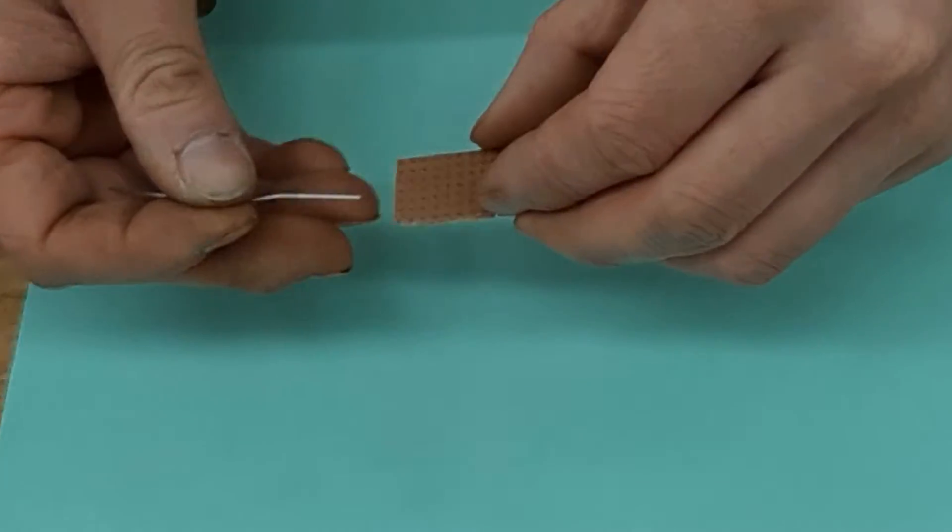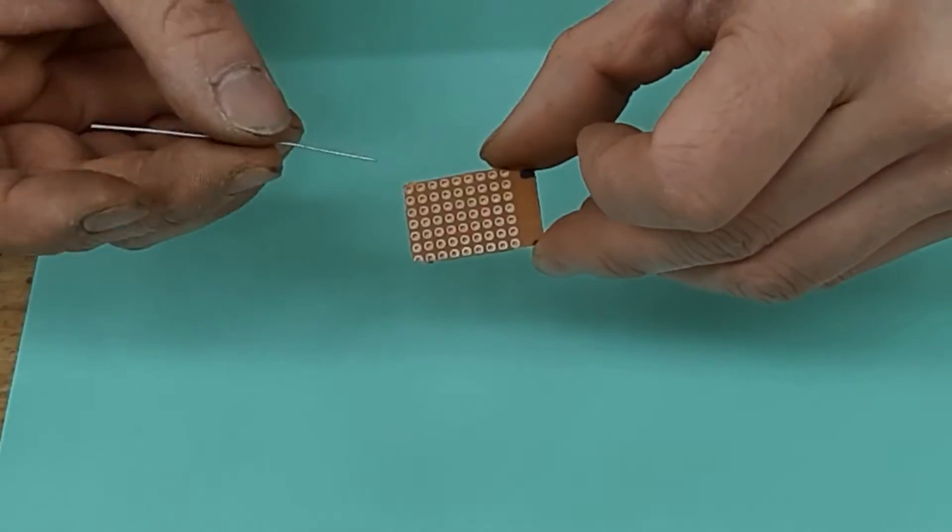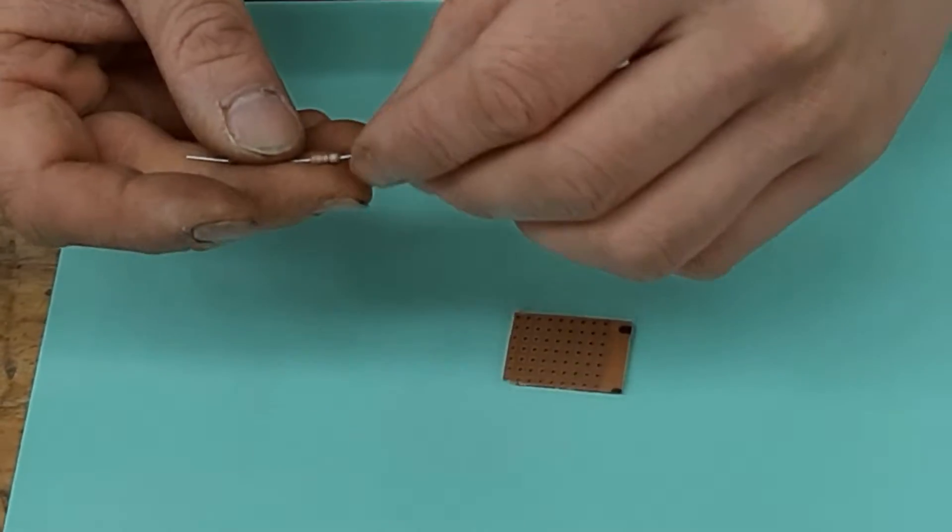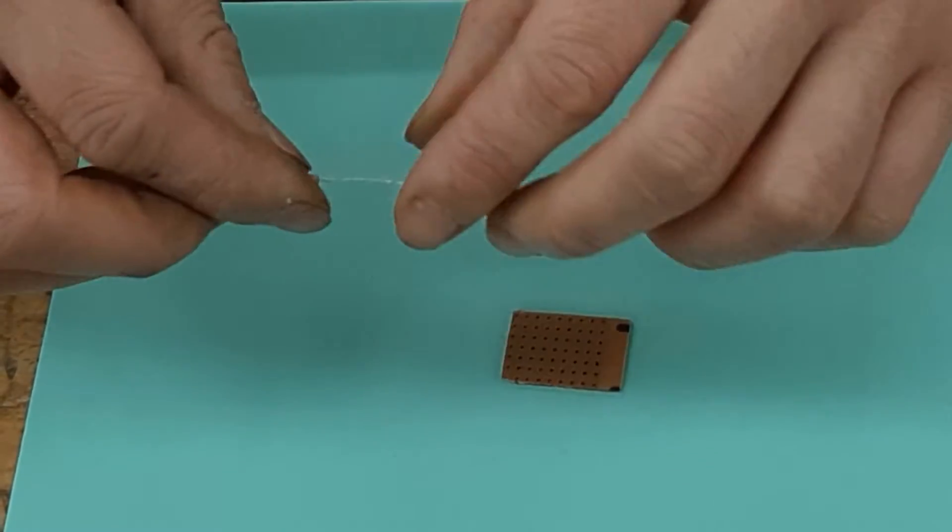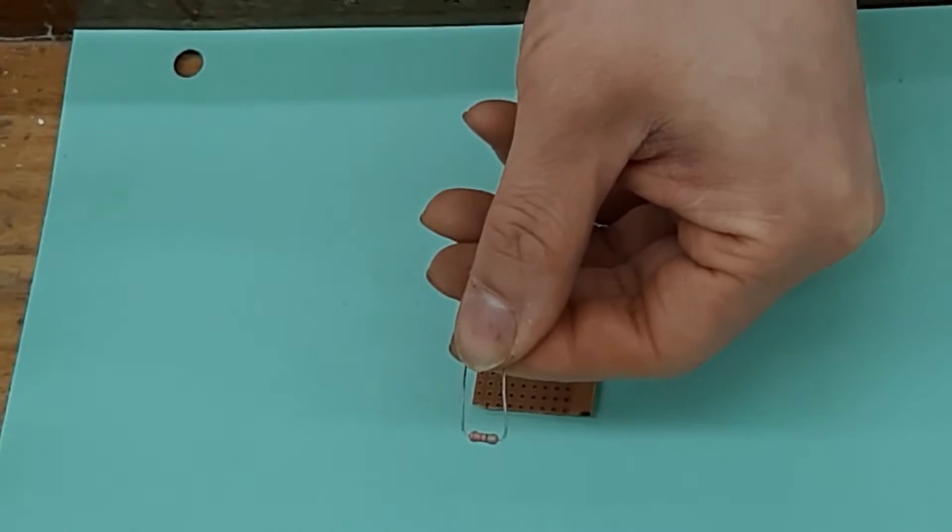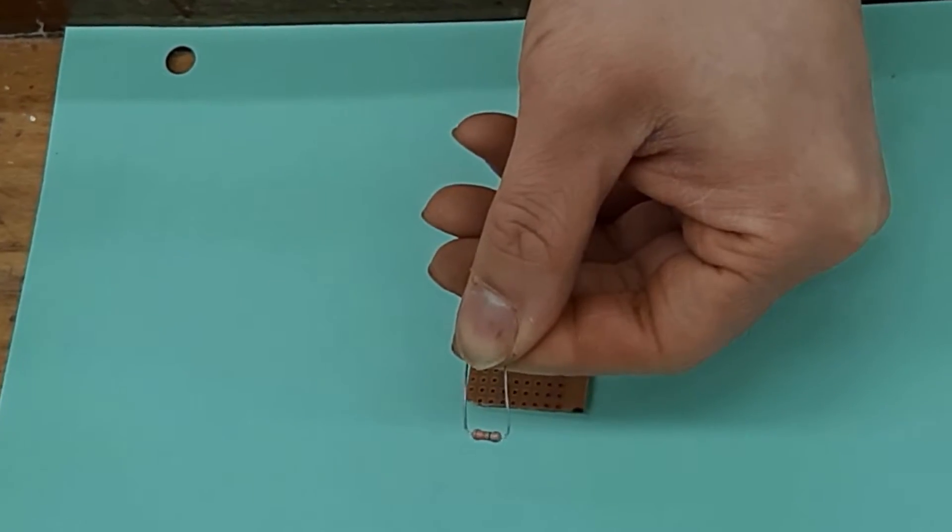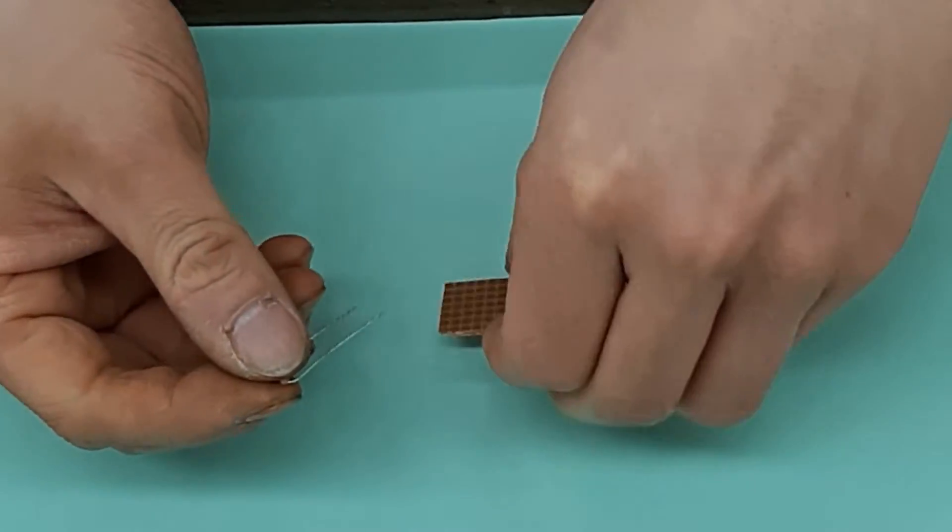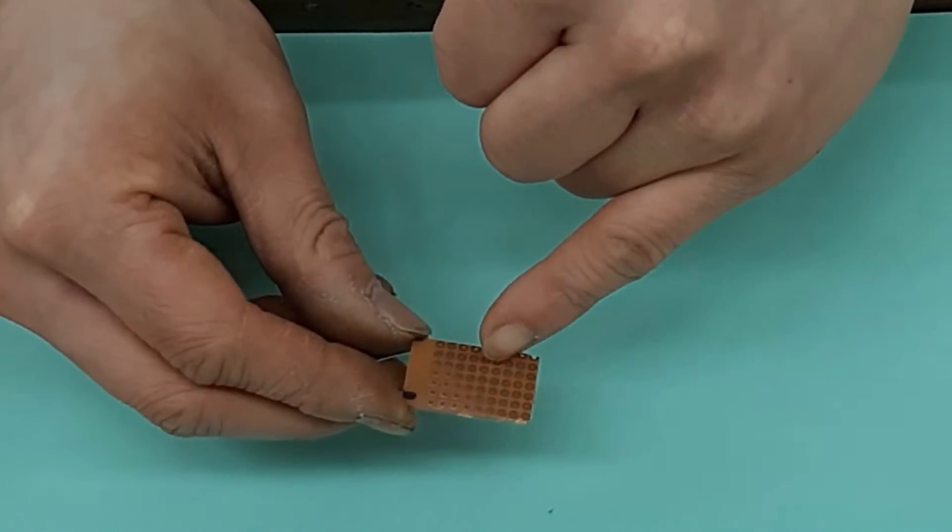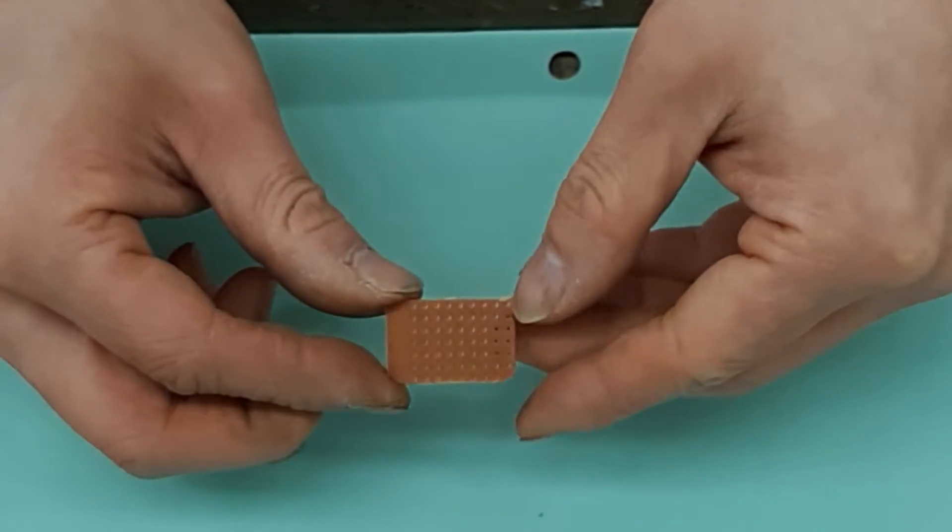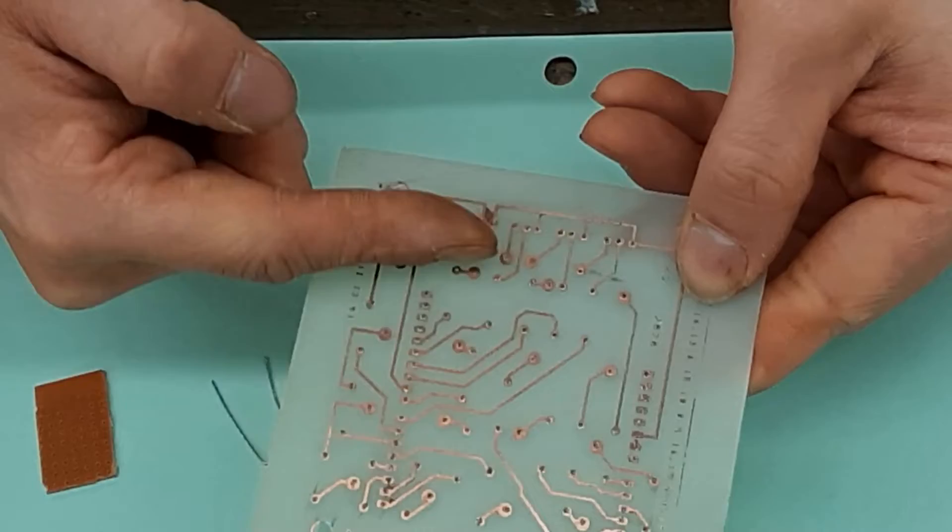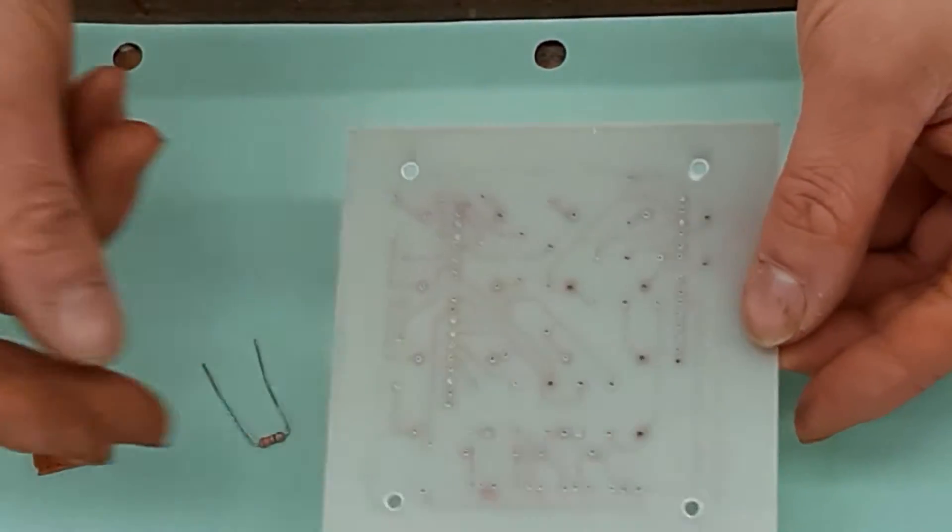The very first thing to be aware of is that when you are soldering, the solder always goes on the copper side. So when you take your component, you're going to bend it. There's your component that's bent like this. And if you look on any circuit board, there's the copper side and there's the non-copper side. On the printed circuit board, here's the copper side, here's the non-copper side.